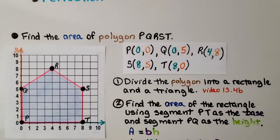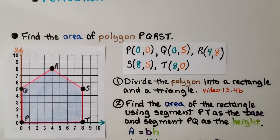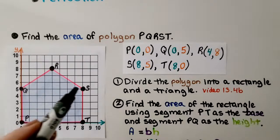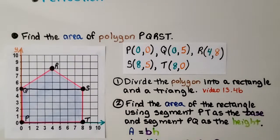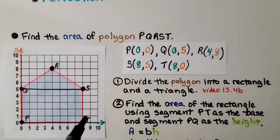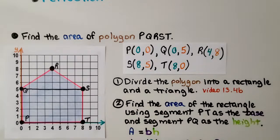Here we need to find the area of polygon P, Q, R, S, T. The first thing we do is divide the polygon into a rectangle and a triangle. We're going to come across from Q to S. We're going to find the area of the rectangle using segment P, T as the base and segment P, Q as the height, because area equals base times height.